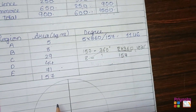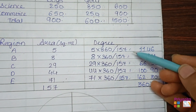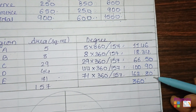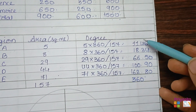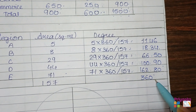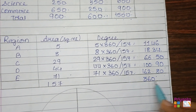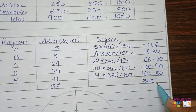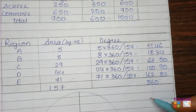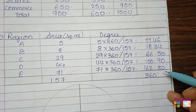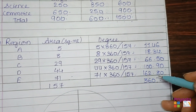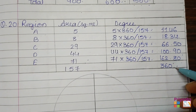Complete the calculation for each region to find all degrees. After finishing all calculations, make a total to verify it comes to 360 degrees. If the total is more or less than 360, you have made a mistake somewhere. Verify the total to be confident about the calculations.